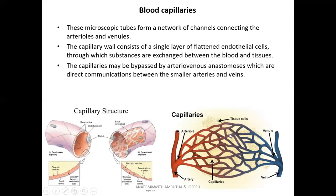Arterioles form capillaries. Capillaries are a network of microscopic tubules lined by endothelial cells, which are flat simple squamous cells. Exchange of substances occurs at the capillary level: tissues receive oxygen from the blood flowing in the capillary, and waste materials produced by cells are transported into the blood through the endothelial cells.